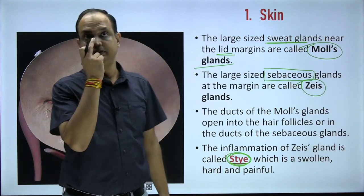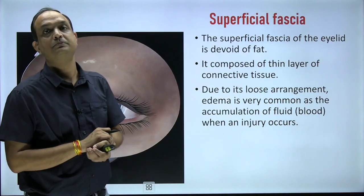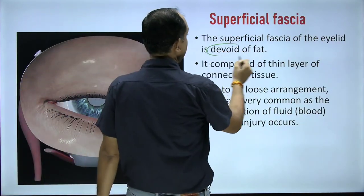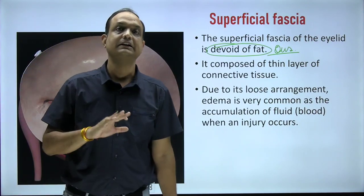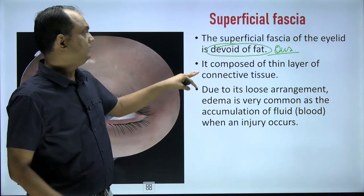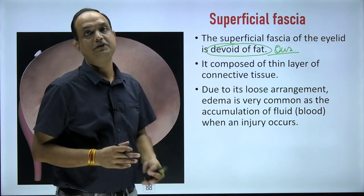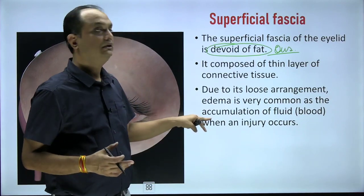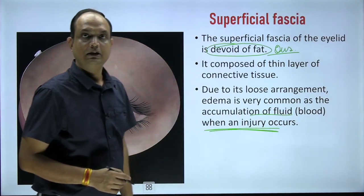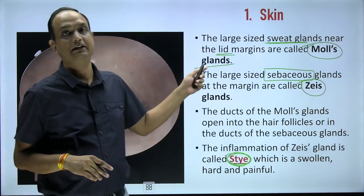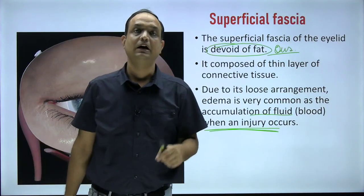The superficial fascia, just behind the skin, is devoid of fat — a commonly asked exam question about which body parts lack fat in the superficial fascia, and the eyelid is one answer. It is composed of a thin layer of loose connective tissue, and due to this loose arrangement it is a very common site of edema; fluid or blood collects here following trauma.